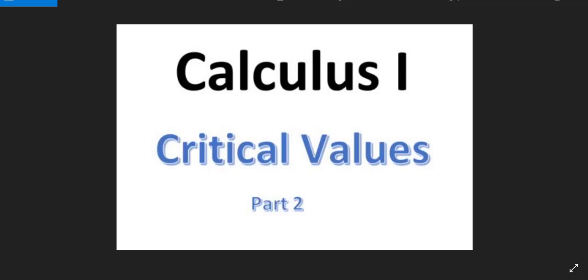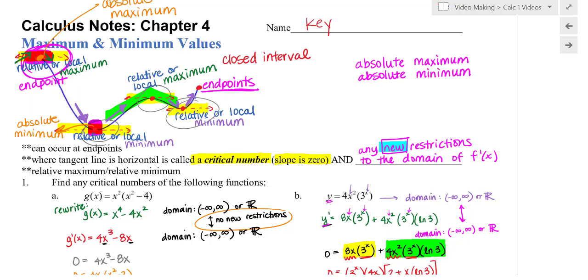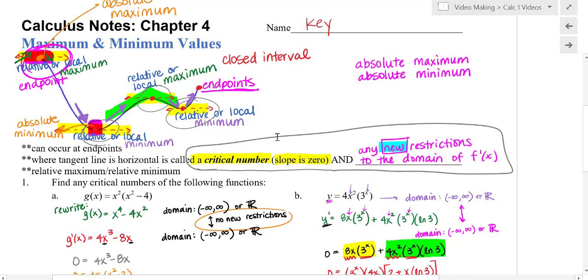Hi and welcome to part two of a Calculus 1 video on critical values. Let's remember first that critical values had two pieces to their definitions. It's not only where the slope of that tangent line is zero, but it's also any new restrictions to the domain of f prime. So we need to look at the domain of the original, the domain of the derivative, and see if there's any new restrictions.